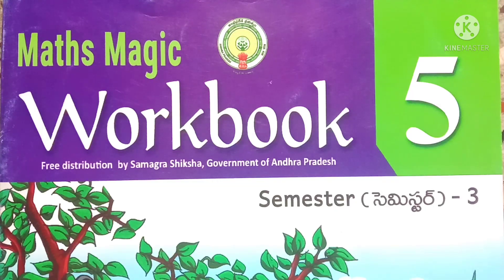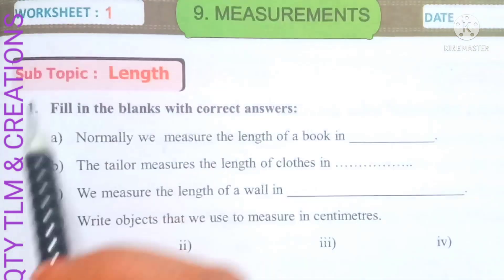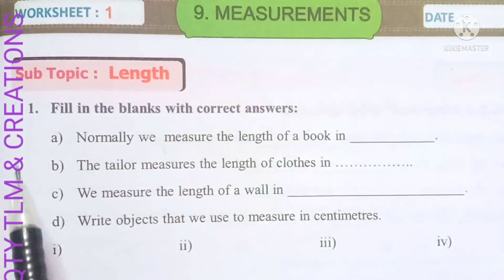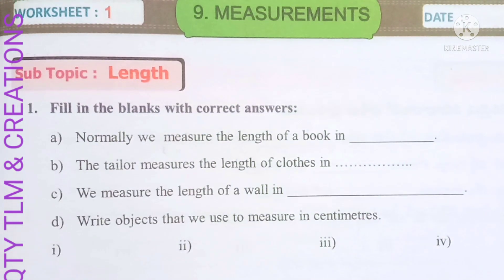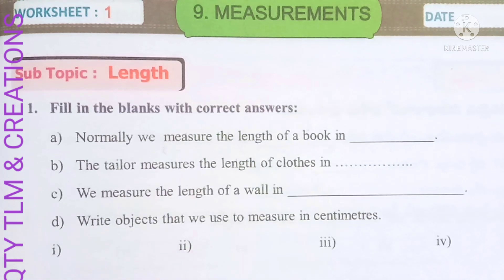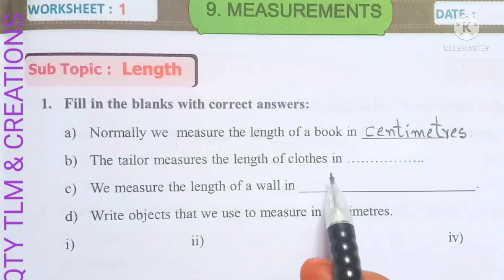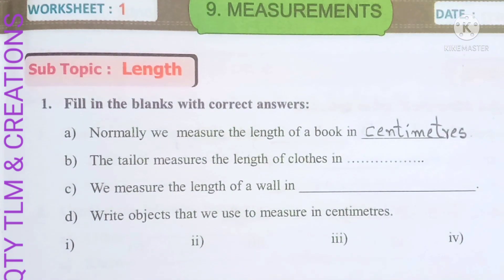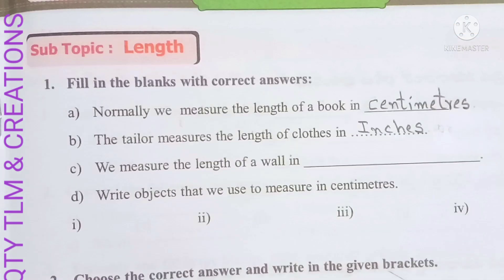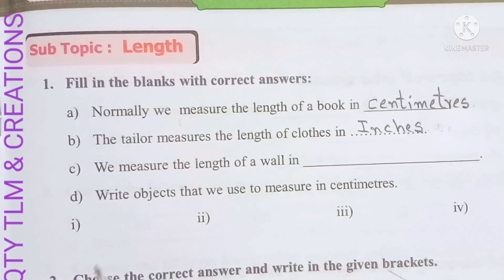Hello everyone, welcome to our channel. Today we are going to learn and write fifth class math magic workbook semester three, measurements worksheet one, subtopic length. First, fill in the blanks with correct answers. We normally measure the length of a book in centimeters. The tailor measures the length of cloth in inches or centimeters.